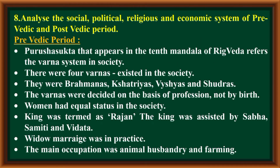Analyze the social, political, religious and economic system of the pre-Vedic and post-Vedic period. Pre-Vedic period: Purusha Sukta, that appears in the 10th Mandala of the Rigveda, refers to the Varna system in society. There were four Varnas in society: Brahmanas, Kshatriyas, Vaishyas, and Sudras. The Varnas were decided on the basis of profession, not by birth. Women had equal status in the society. The king was termed as Rajan and was assisted by Sabha, Samiti and Vidata. Widow marriage was in practice. The main occupation was animal husbandry and farming.